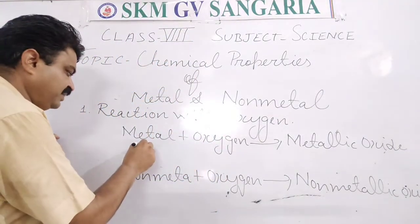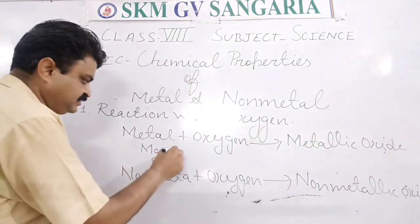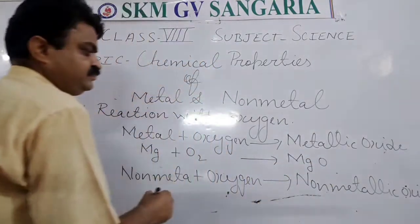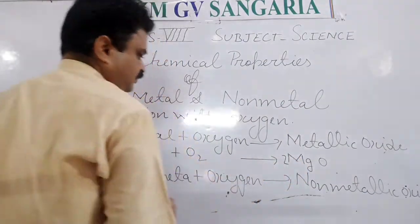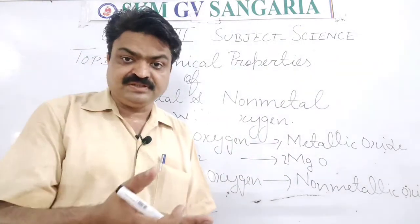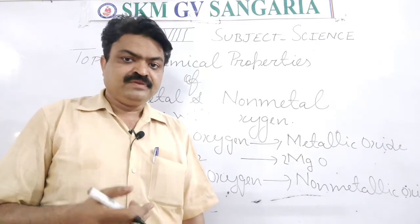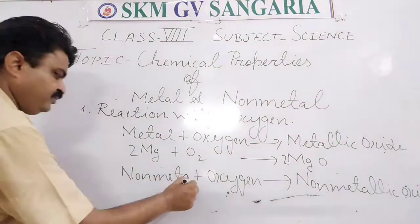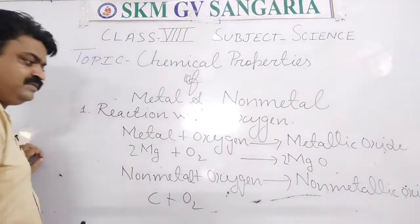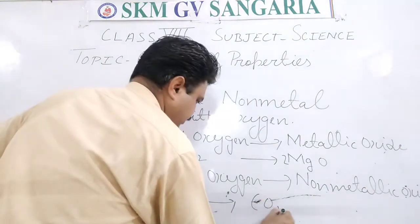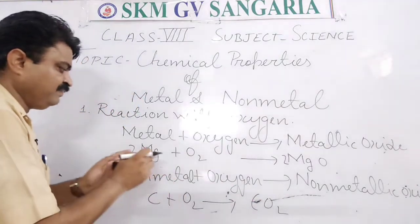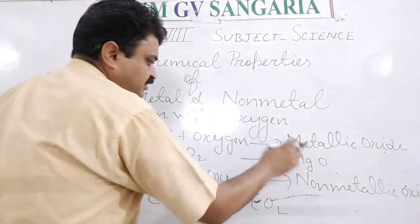For example, when magnesium reacts with oxygen it forms magnesium oxide, MgO. When iron reacts with oxygen it forms iron oxide. When calcium reacts with oxygen it forms calcium oxide. As for non-metals, carbon is one we use in daily life — when pure carbon reacts with oxygen it forms carbon dioxide. So non-metals form non-metallic oxides, and metals form metallic oxides.